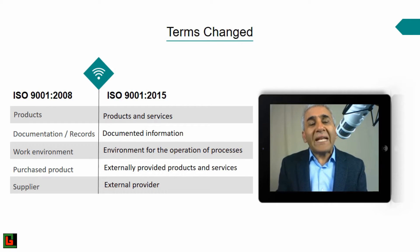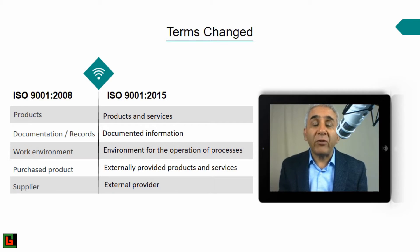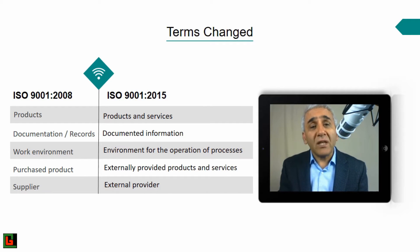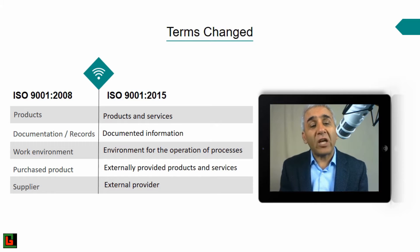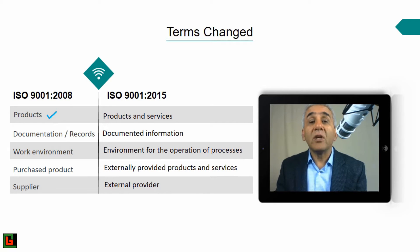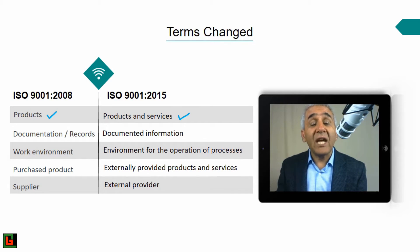Looking at the difference between the 2008 version and 2015 version, let's start with some basic changes related to terms. Some terms in the 2008 version have been given a new name in 2015. In the 2008 version we had the term 'product,' and in 2015 that term is now 'products and services.'